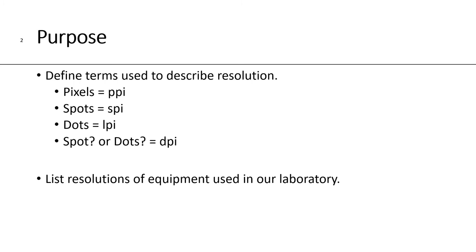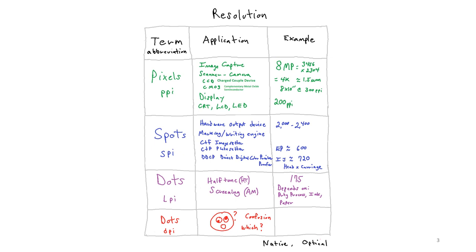The primary purpose of this presentation is to define common terms we use in the industry when it comes to resolution. For example, PPI is pixels per inch, SPI is spots per inch, LPI is lines per inch but it's really talking about the halftone dots, and then DPI, which can be very confusing because we don't know if it's talking about the spots or the dots. The other purpose here is to list the resolution of all the equipment we use in our laboratory here at the college. This slide is just a hand-drawn table that helps me get organized on my subject content, and from this I create the more formal PowerPoint presentation.